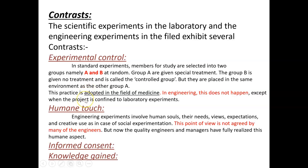The contrasts are experimental control, human touch, and informed consent. Experimental control means we select group A and group B — group A with special treatment and group B with no treatment as the control unit. Human touch at this point is not agreed upon by many engineers because it involves human needs and expectations. These are all the topics we have discussed for engineering as experimentation. Thank you.